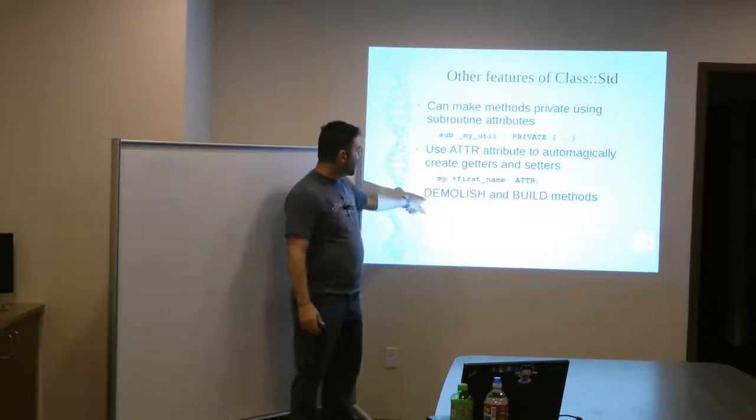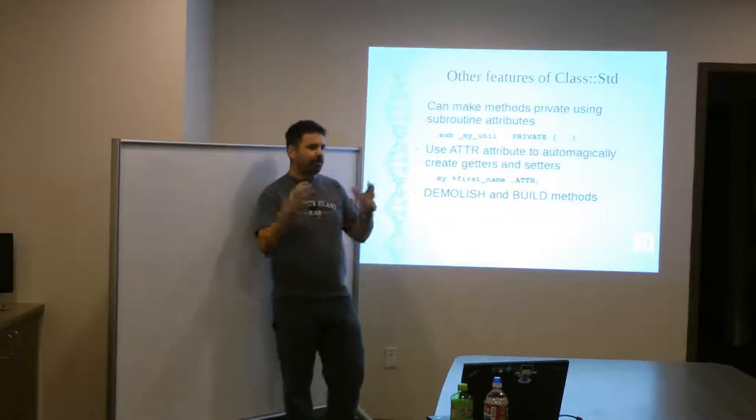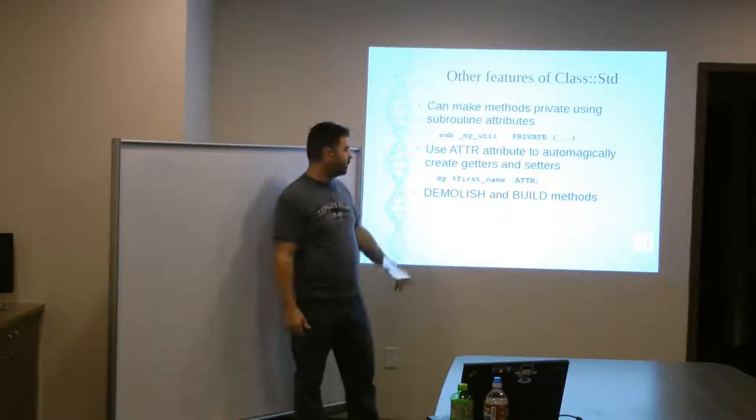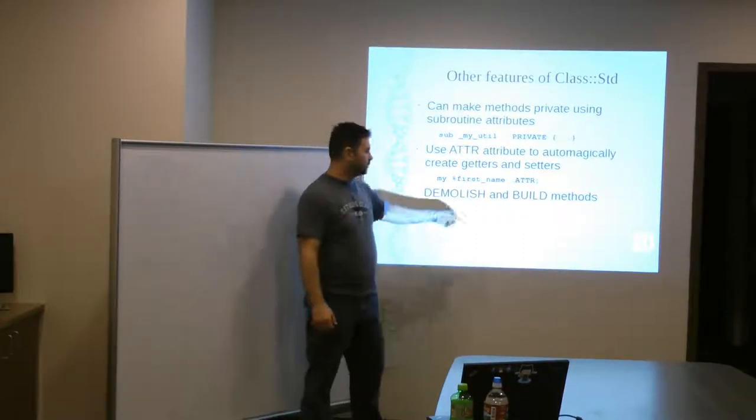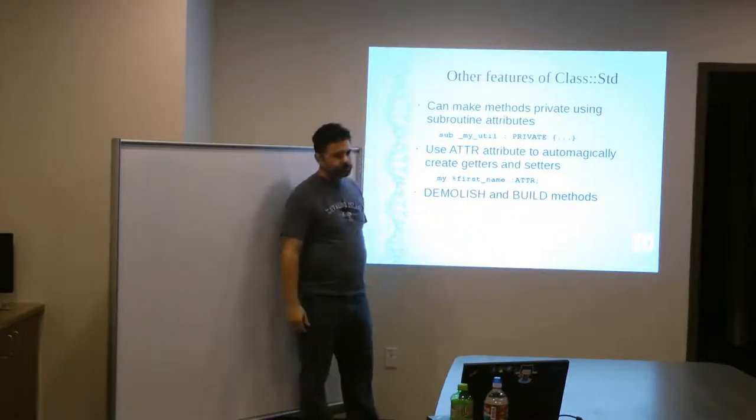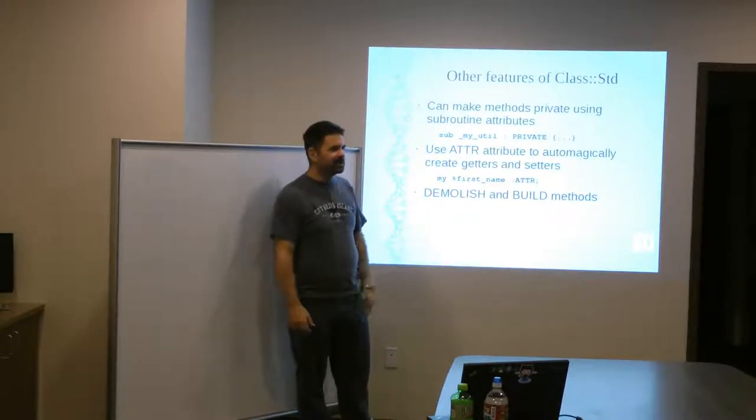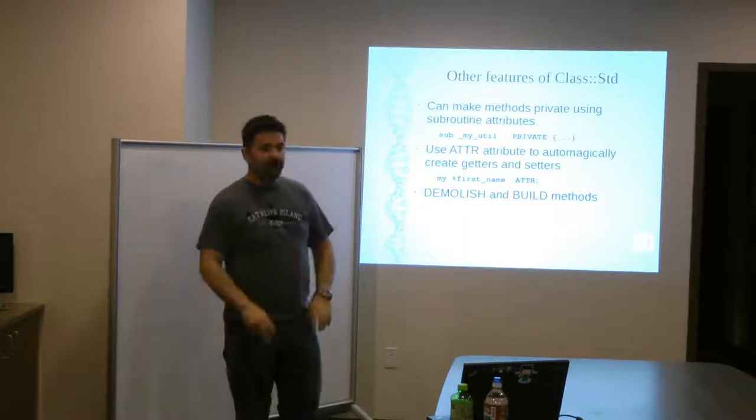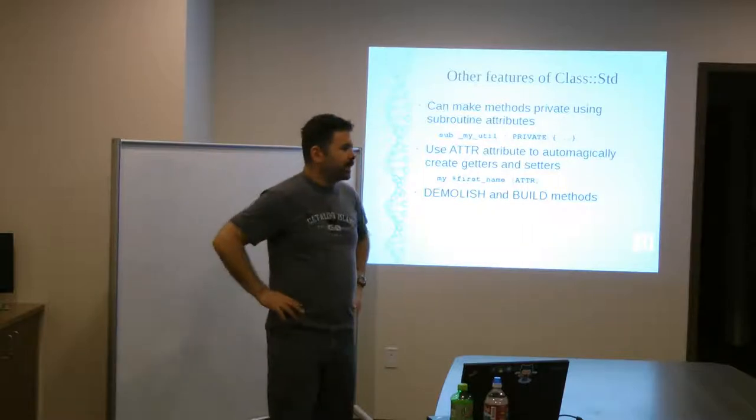And then he added these demolish and build methods, which are kind of wrappers around, well, build is like your wrapper around new. And demolish is like your wrapper around destroy. So, this is your, you know, constructor and your destructor. And you can read all about those in the pod. I'm not going to go into a lot of detail on that. This is an introduction, an overview, not a tutorial. Any other questions about inside out?